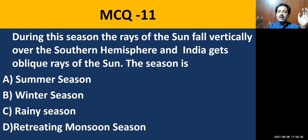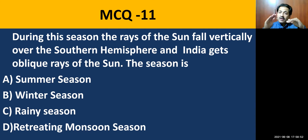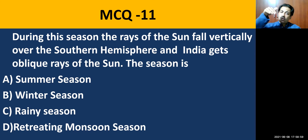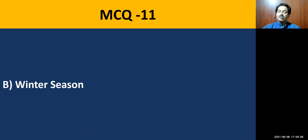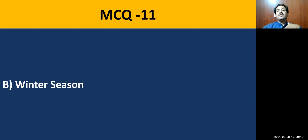MCQ question number eleven: during this season, rays of the sun fall vertically over the southern hemisphere — straight over the southern hemisphere — and India gets oblique rays of the sun. The correct option is winter season. Due to oblique rays of the sun on the northern hemisphere and vertical rays on the southern hemisphere, India receives low temperature — that is winter.